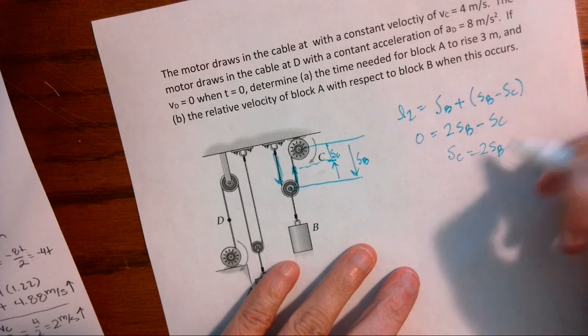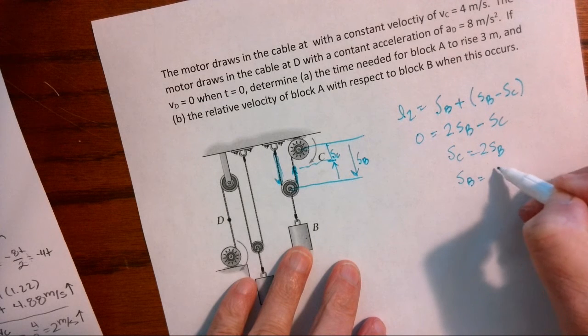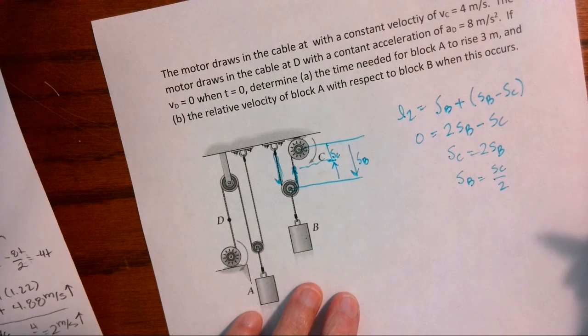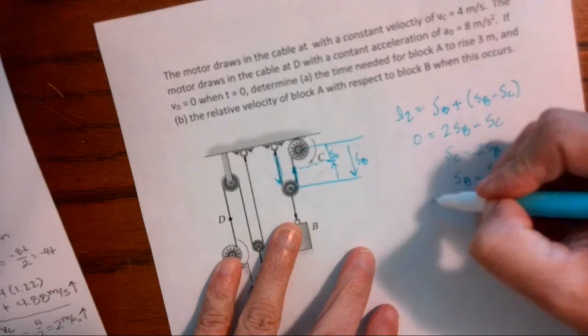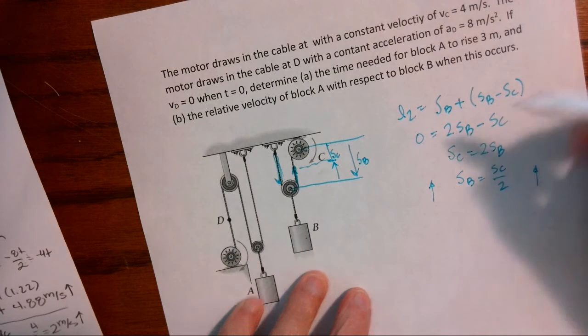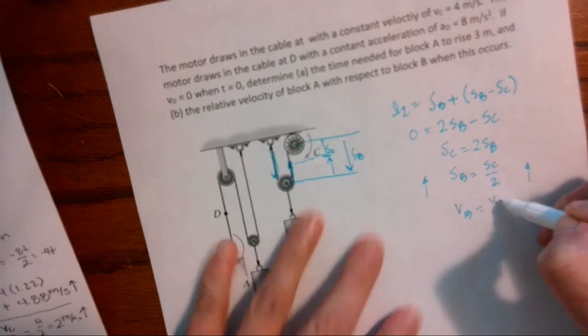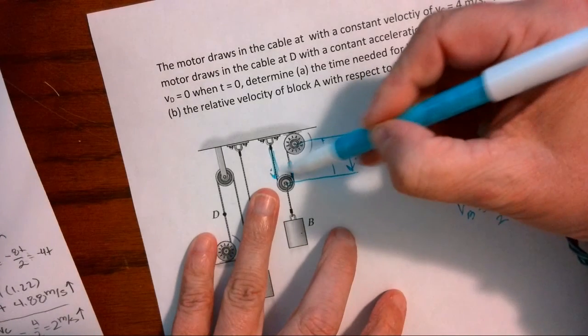But I really need to know B in terms of C. So SB equals SC divided by two, which makes sense. They're both positive. So as SB is going up, SC is also going up. That makes sense. So my velocity of B is my velocity of C divided by two. Makes sense. I'm just cutting it in half.